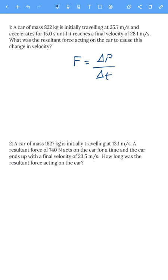In a more complicated format, the change in momentum is the final momentum minus the initial momentum, so that would be MV minus MU, divided by the change in time.